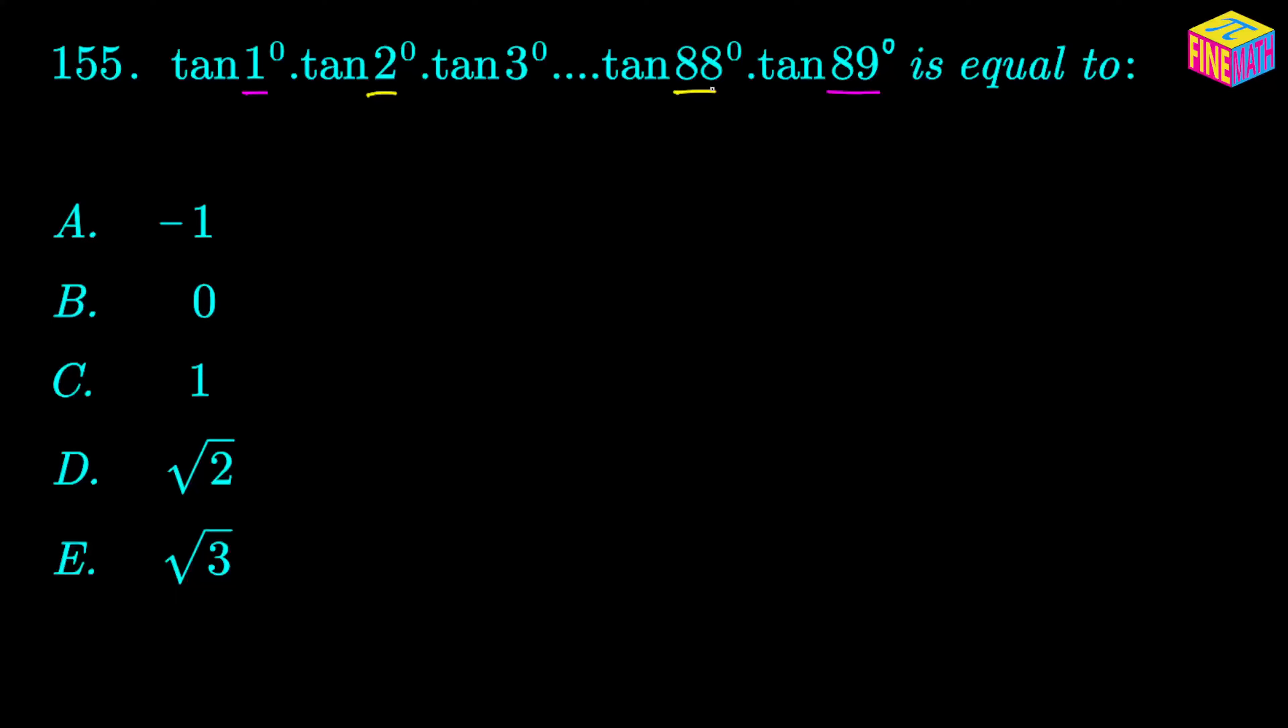And actually what we have to do is use the concept of trigonometric ratios of complementary angles. Because if you think about it, 1 degree is a complementary angle of 89 degrees, or 89 degrees is a complementary angle of 1 degree. So these are the pairs of complementary angles, and let's see what we can do about them.